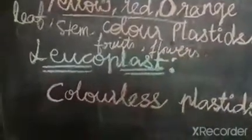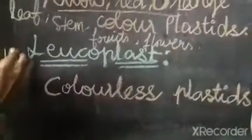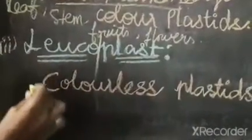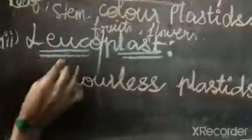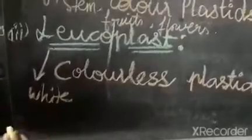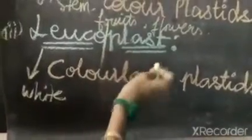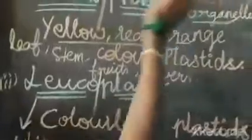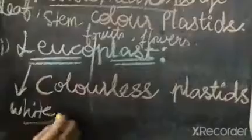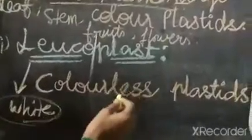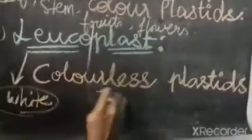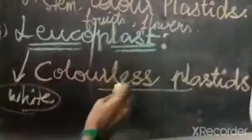The third one is leucoplasts. Leuco means weakly colored such as white color, and plast means organelles or plastid. Leucoplasts are the colorless plastids.